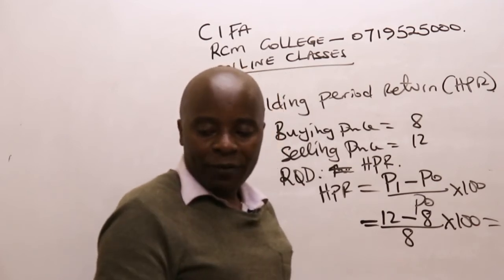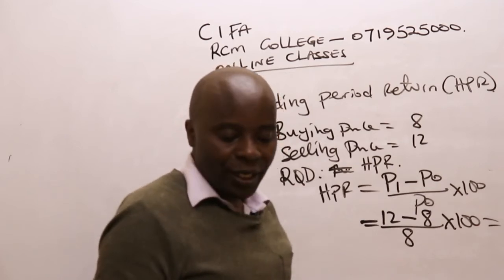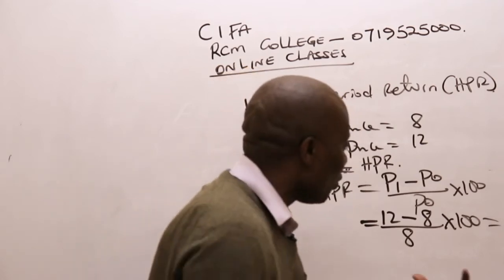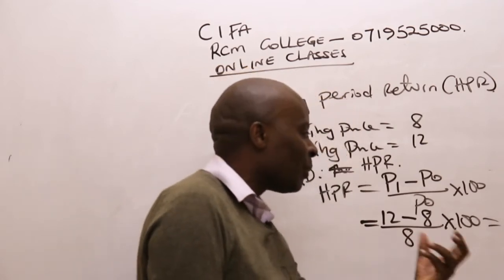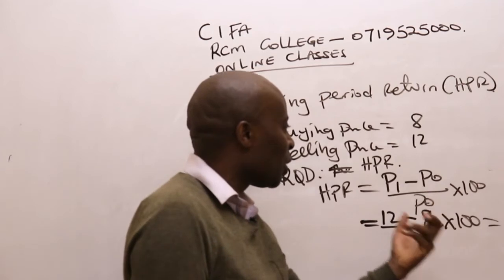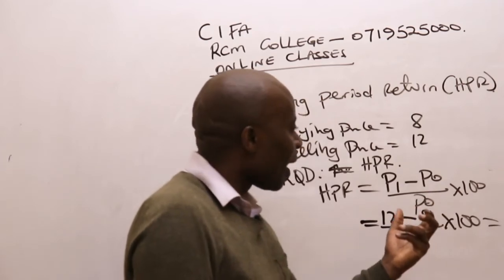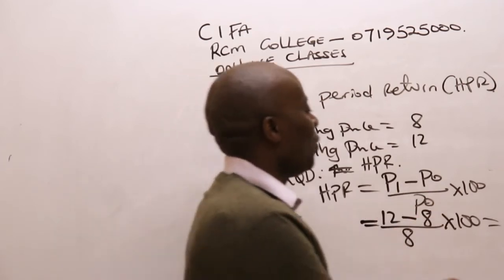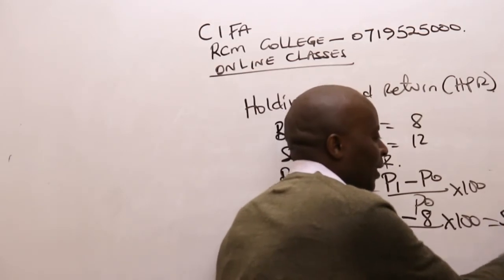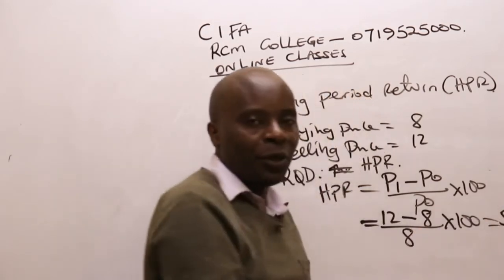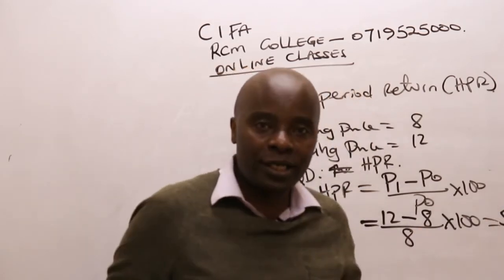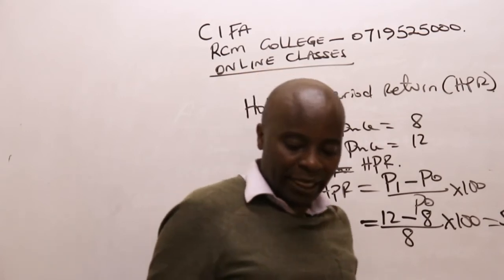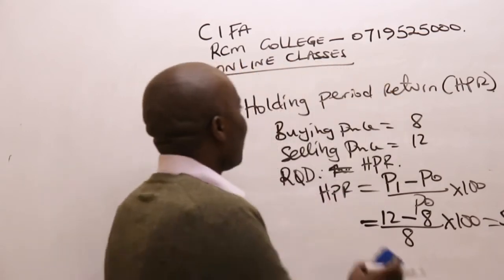So 0.5 times 100 is 50%. It means that for the one year that I held this particular share, I gained 50%. So the holding period return over the one year is 50%. Thank you.